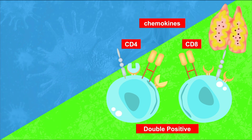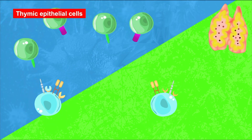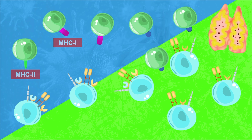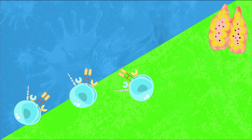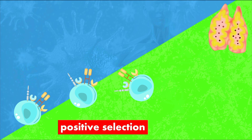Now we need to see if the CD4 and CD8 will bind to two molecules on the thymic epithelial cells. CD8 is supposed to recognize and bind to MHC class one molecules, and CD4 is supposed to recognize and bind to MHC class two molecules. If for some reason they don't recognize them, they are killed by apoptosis. If they do bind to the MHC molecules, they can move on to the next step. This is called positive selection — if it binds, we keep them.